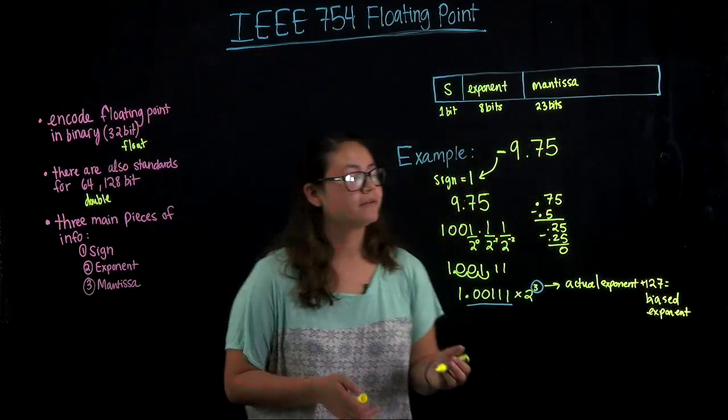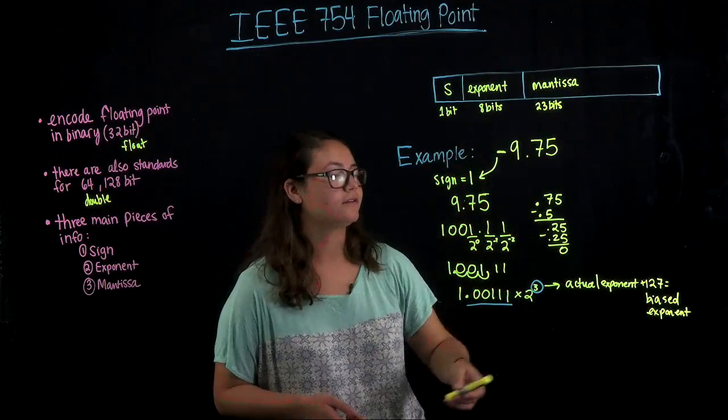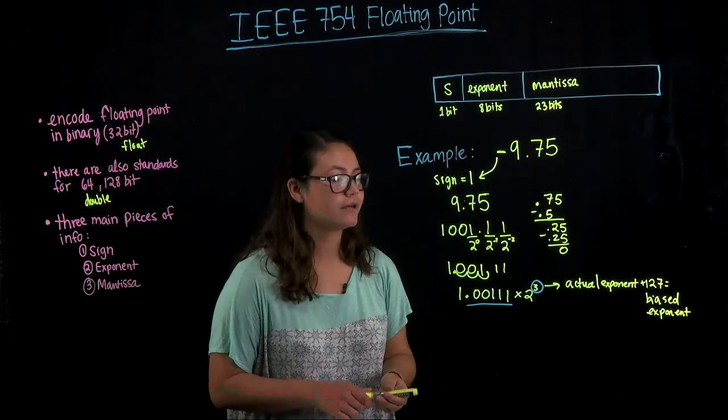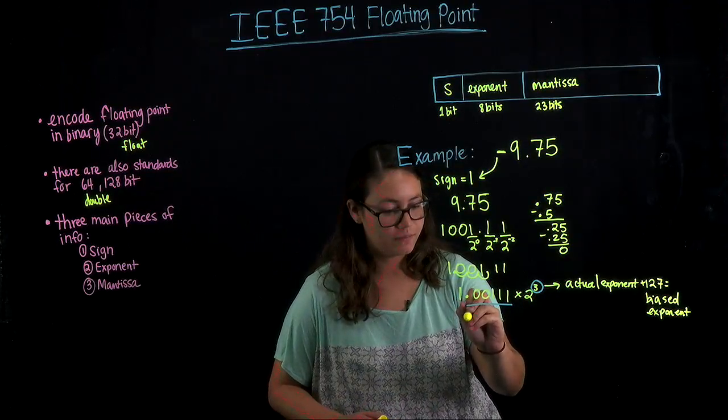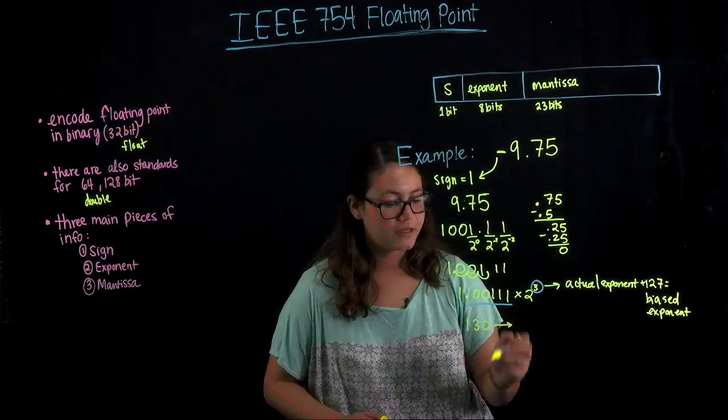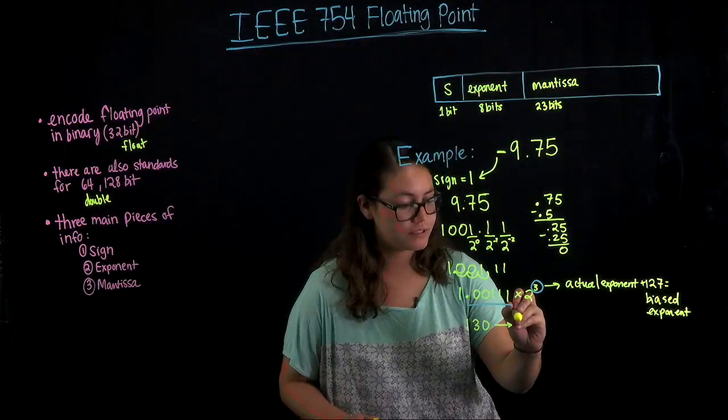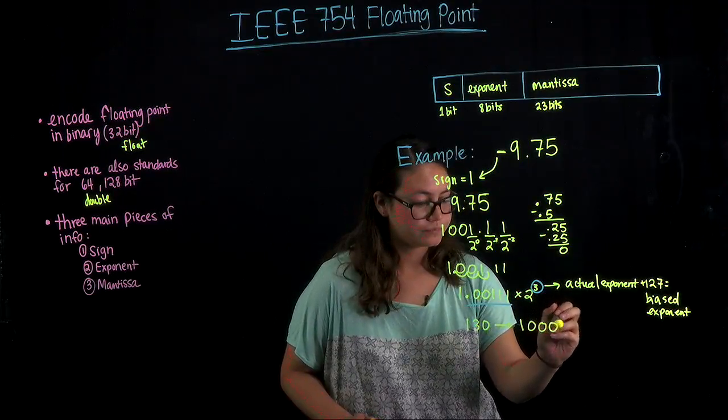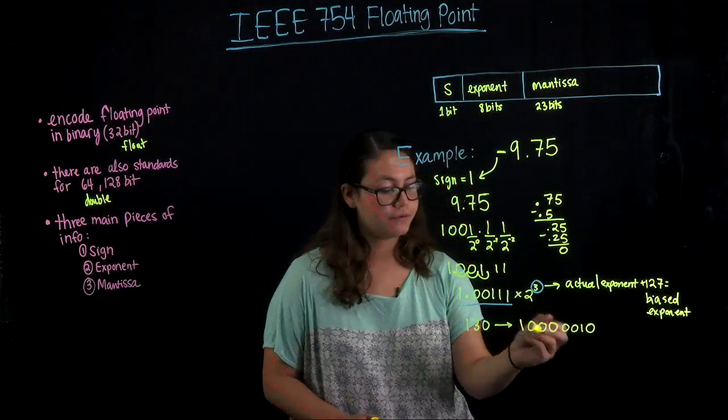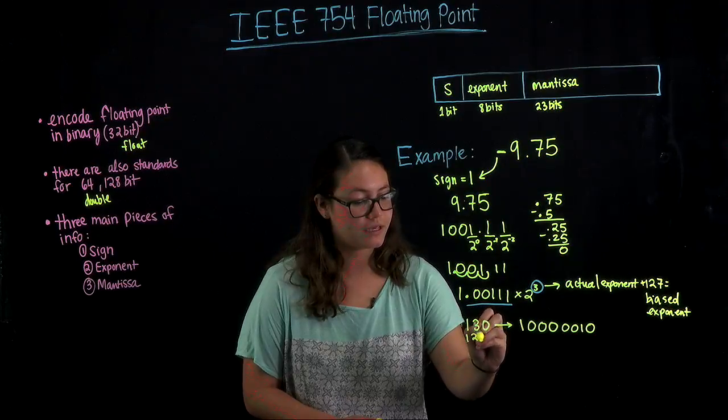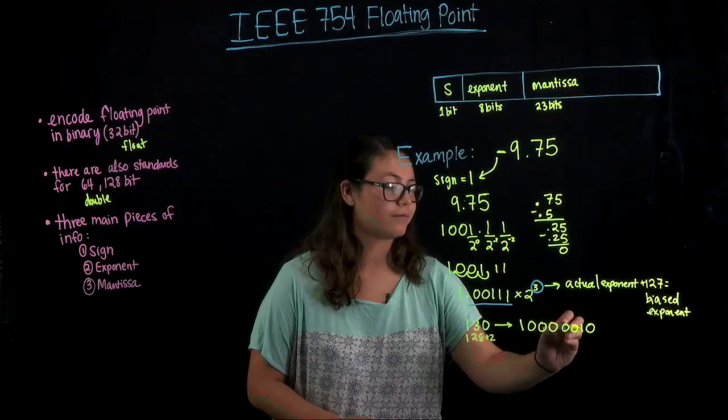You have to remember that before you go to encode the exponent into here, you just have to add 127 to it. Once we do that, we get the exponent is going to be 130. And then we just need to write that in 8-bit binary. That's going to be 2 to the 7 and 2. It's going to be 128 plus 2. So we get 10000010.